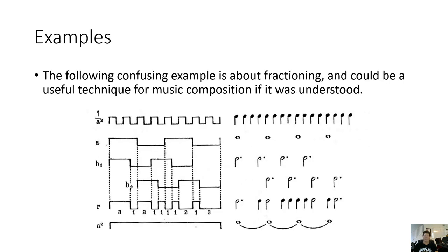Here's an example of what might be confusing. The following confusing example is about fractioning, which could be a useful technique for music composition but it's really hard to understand. Schillinger's notes have about two paragraphs explaining what this is, and then there's a diagram and you're like, what does that mean? What we're trying to do is take a JavaScript app and use it to explain what this means in terms of rendering sound.